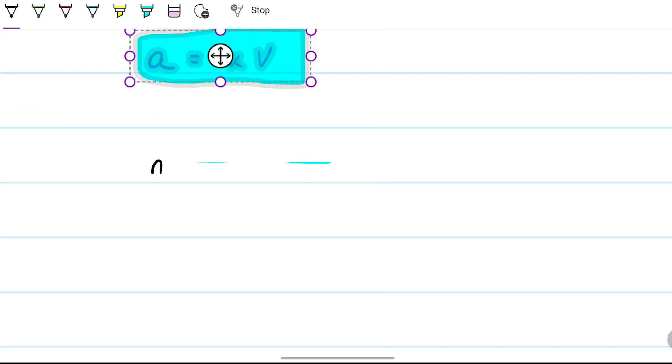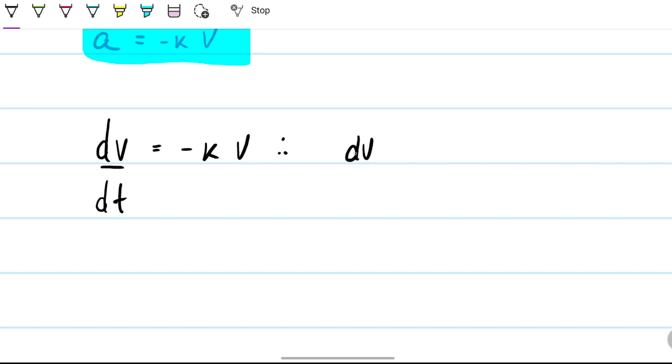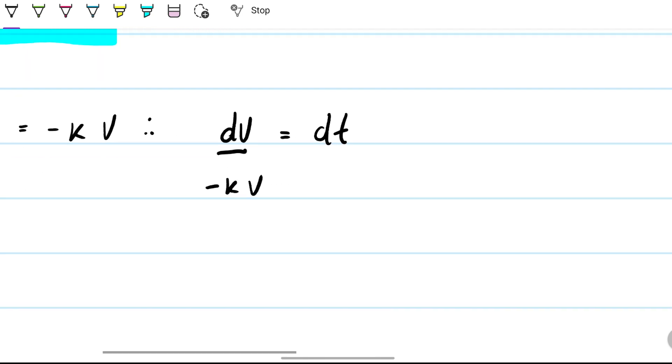What we're saying there is that the rate at which the velocity is changing with time is -k times velocity. So if that's the case, what I can do is say therefore dv divided by -kv equals dt, and if I now integrate on both sides...